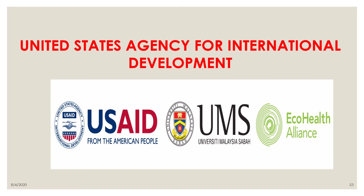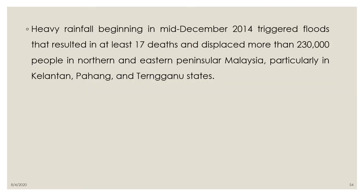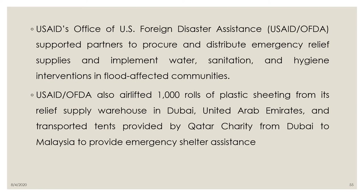The United States Agency for International Development (USAID): heavy rainfall beginning mid-December 2014 triggered floods resulting in at least 17 deaths and displacing more than 230,000 people in northern and eastern peninsular Malaysia, particularly in Kelantan, Pahang, and Terengganu. USAID's Office of Foreign Disaster Assistance supported partners to procure and distribute emergency relief supplies, implement water, sanitation, and hygiene interventions, and airlifted around 1,000 rolls of plastic sheeting from Dubai and transported tents from Qatar to provide emergency shelter assistance.